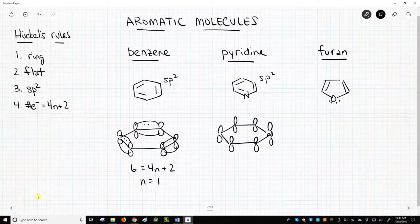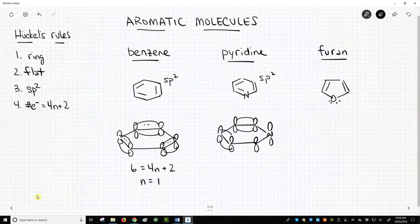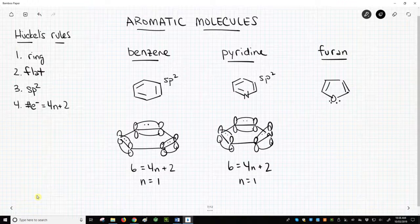It's really just like benzene. We have 3 pi bonds. Carbon, carbon, carbon, carbon, and here's a carbon-nitrogen pi bond. We have 2 electrons in each. That's 6 electrons, 6 equals 4n plus 2, n equals 1. Pyridine is aromatic, but there's a question here.